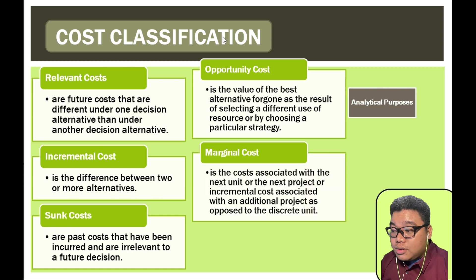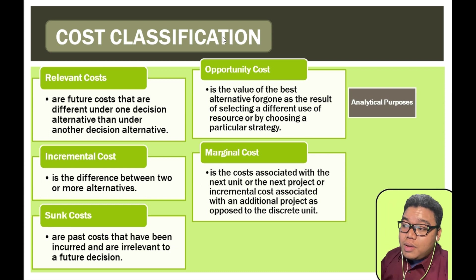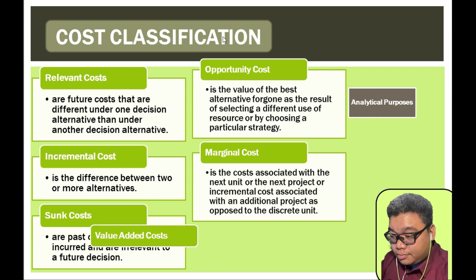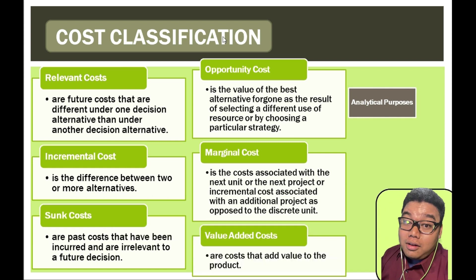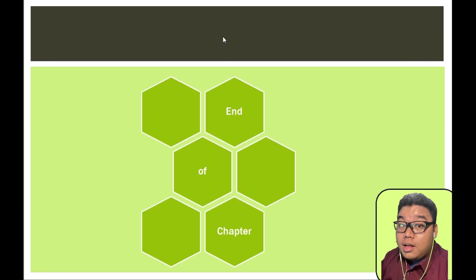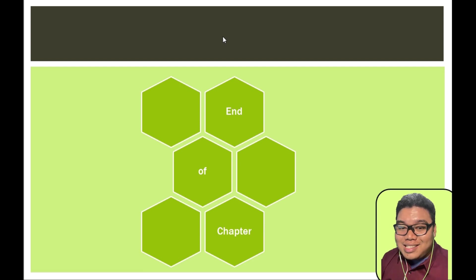Marginal cost is the cost associated with the next unit or next project — essentially the cost of additional units. Value-added cost is a cost that adds value to the product. That concludes this module, so stay tuned for a discussion on variable costing and cost estimation.